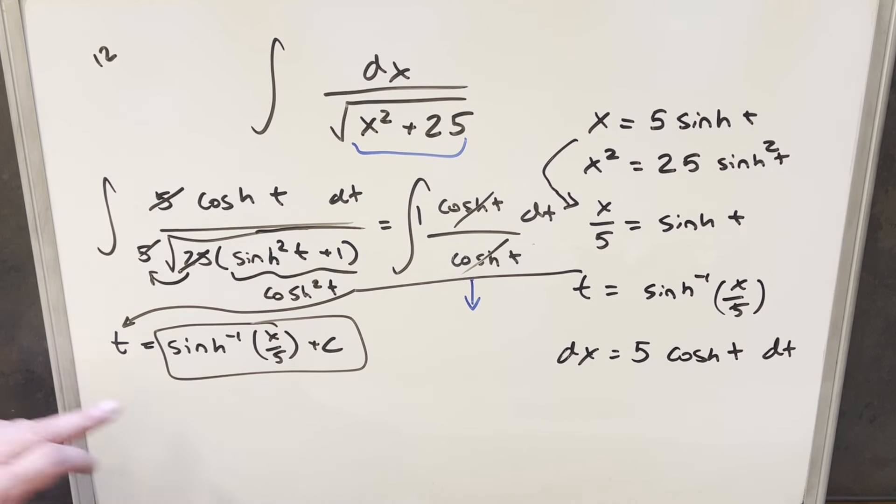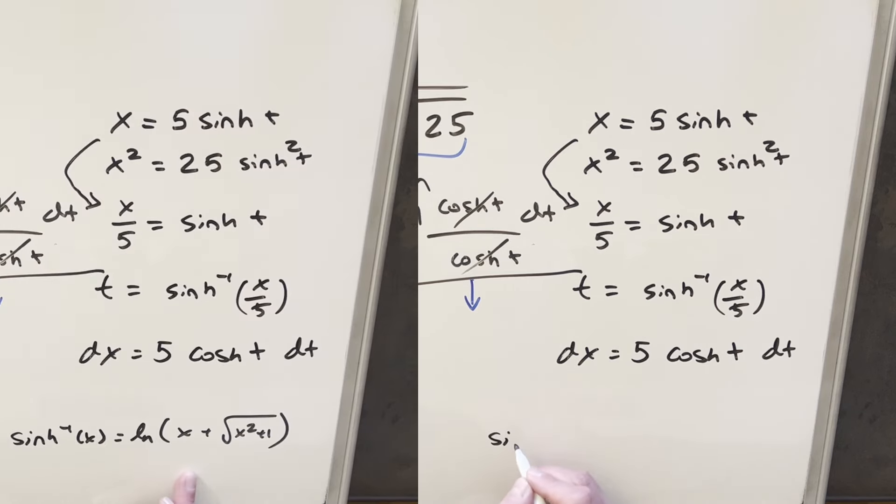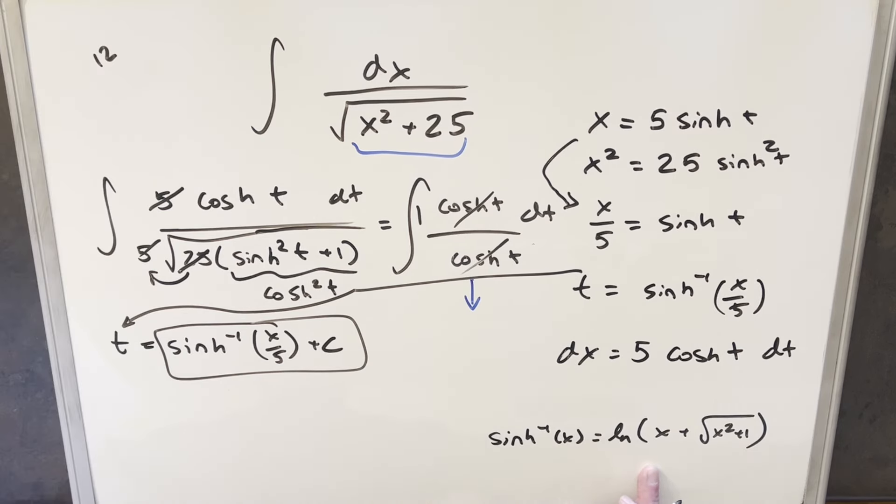Now we can also get this back into the form of natural log. Let's just look at our definition for inverse sinh really quick. So we have this definition over here for inverse sinh. The only thing different here is our input is x over 5 instead of just x. So if we input x over 5 into this thing, we're going to have natural log x over 5 plus—then inside the radical, this becomes x squared over 25 plus 1.